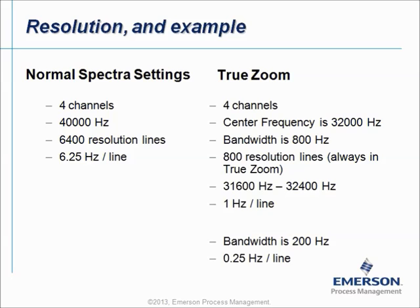For this example, if you notice that around 32 kHz you have some energy and you want to analyze it better and need more resolution, a solution is true zoom. In true zoom you can also work up to 4 channels. You have to specify your center frequency — in this example 32 kHz — and a bandwidth of 800 Hz. True zoom always works with 800 lines of resolution, so we collect a spectrum starting at 31,600 Hz till 32,400 Hz with 1 Hz of resolution. If you decrease the bandwidth to 200 Hz, you will have a resolution of 0.25 Hz.